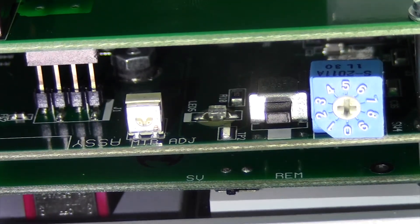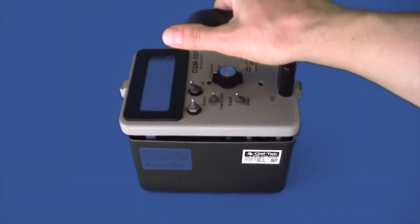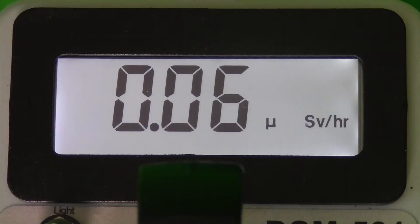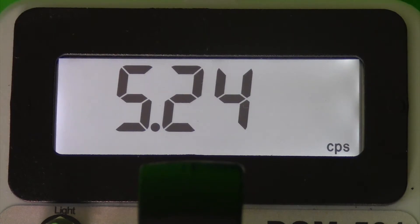After you switch the units on the circuit board, reassemble the meter. The SI units will now appear on the display. Sieverts for dose and CPS for counts.